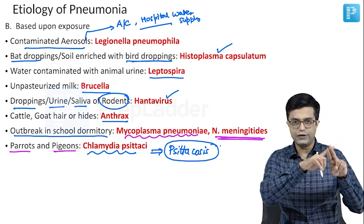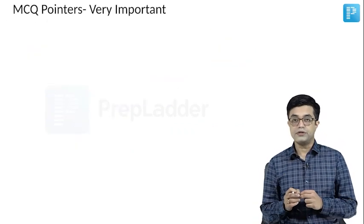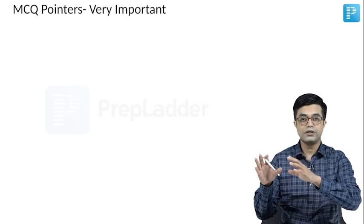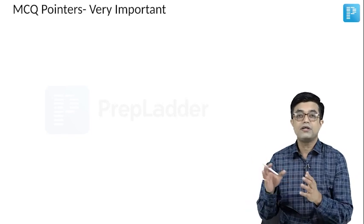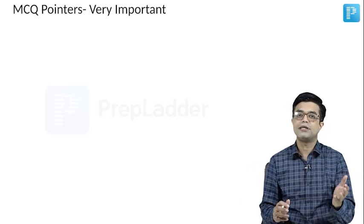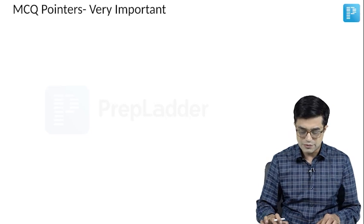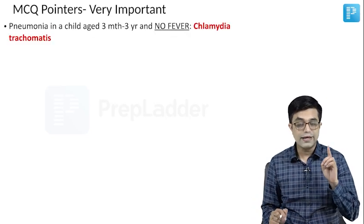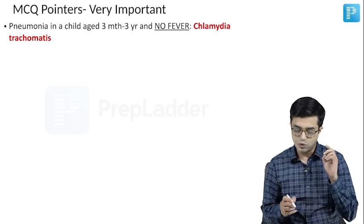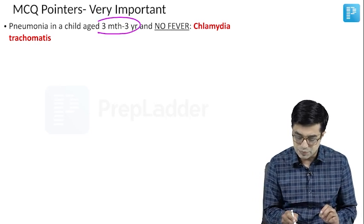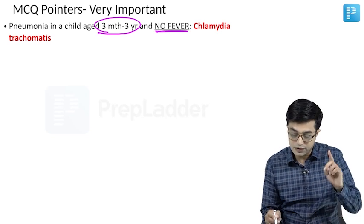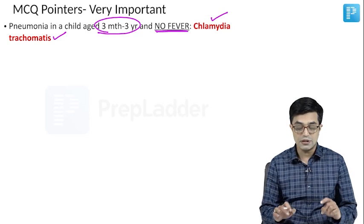Now, MCQ pointers — very important. All points discussed are either MCQs already asked, asked in central institutes, or similar questions in pre-PG and superspeciality exams. First pointer from Nelson: if you get a case of pneumonia in a child aged 3 months to 3 years with no fever, one likely diagnosis to suspect is Chlamydia trachomatis. Remember this.